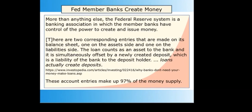More than anything else, the Federal Reserve System is a banking association in which the member banks have control of the power to create and issue money. Money is a creation of the human mind — a means of payment, a store of value, and the thing that makes the world go around. After a little investigation, you will learn that money in our society is a bank account entry, which can become currency, a payment, or anything else you would use money for. These bank account entries make up around 97% of the money supply and are created when a commercial bank issues a loan by crediting the borrower's account. The other 3% is made up of coins issued by the government.